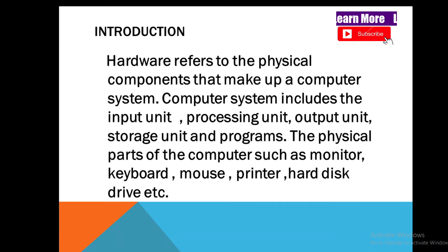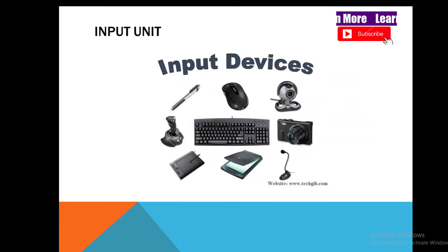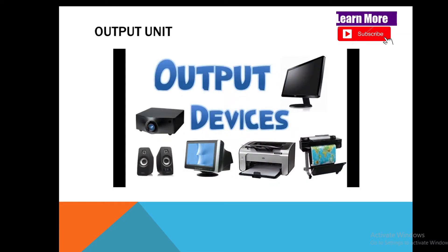Physical parts of the computer such as monitor, keyboard, mouse, printer, and hard drive are all computer hardware. Input devices — like keyboard, microphone, webcam, and joystick — are all physical parts and therefore computer hardware. Output devices — like monitor, printer, speaker, and projector — are also physical parts and computer hardware.